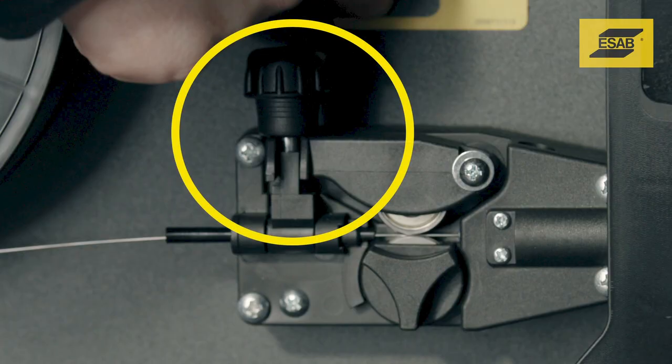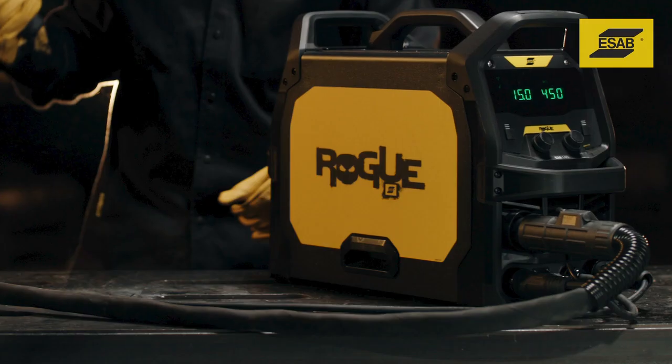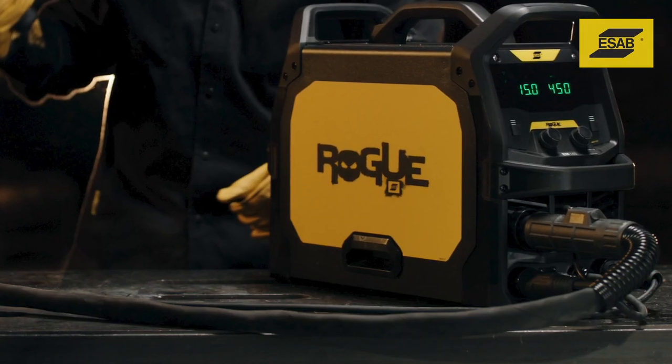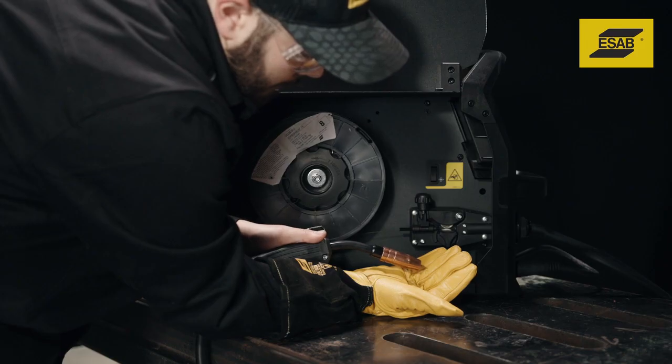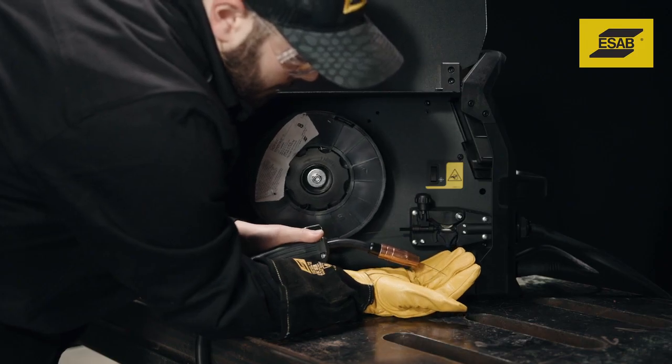Secure the pressure roller arm and wire drive tension knob. Lay or stretch the MIG gun out straight. Use the wire inch mechanism or trigger the MIG gun to feed wire until it comes out the end of the gun.